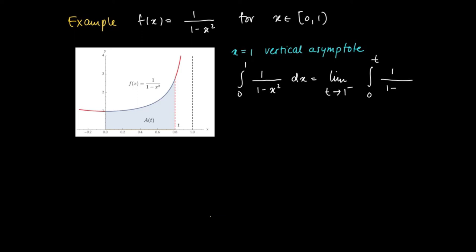This can be solved by considering the improper integral from 0 to 1 of 1/(1-x²) dx, which is the limit as t approaches 1⁻ of the integral from 0 to t of 1/(1-x²) dx. Let's try to find the definite integral from 0 to t for an arbitrary number between 0 and 1.